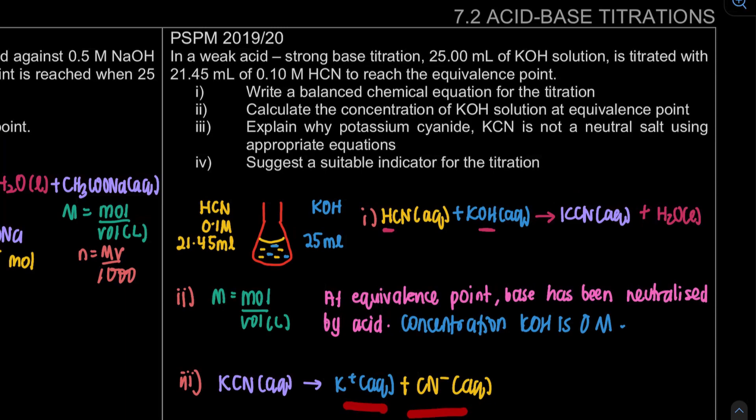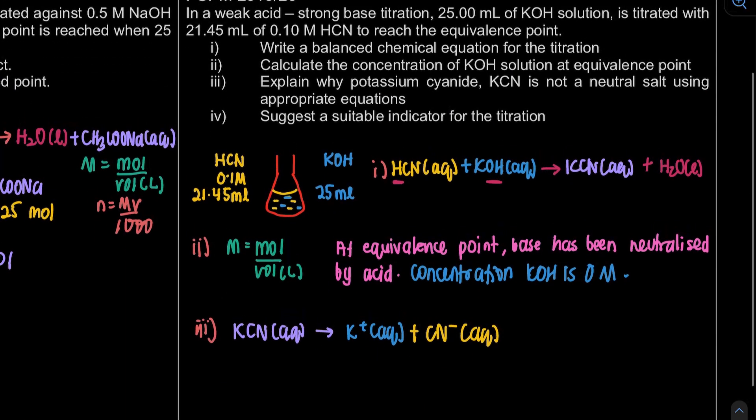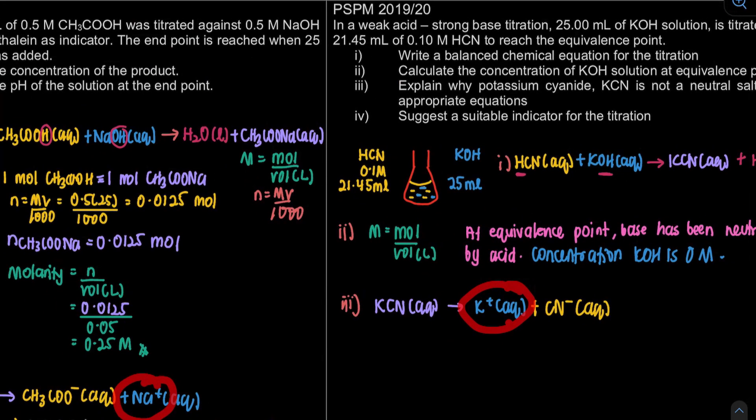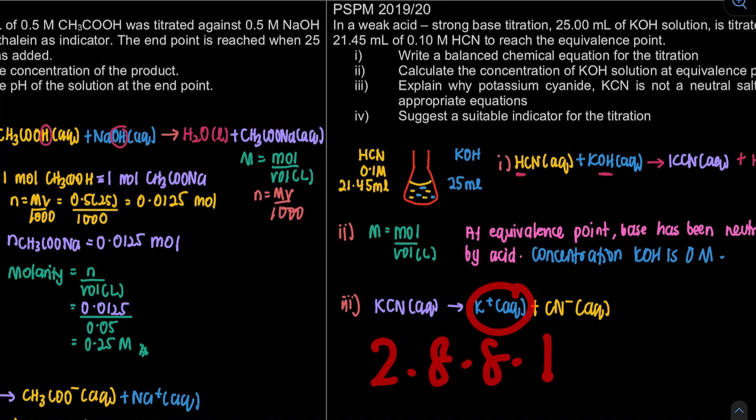Next, based on our ions, we're gonna react with water. Again, K plus is actually a stable ion. The same case as sodium and other Group 1 elements. We have electronic configuration 2.8.8.1. When it becomes K plus, it becomes 2.8.8. You already achieve octet, so it is stable, so it will not react. No reaction.